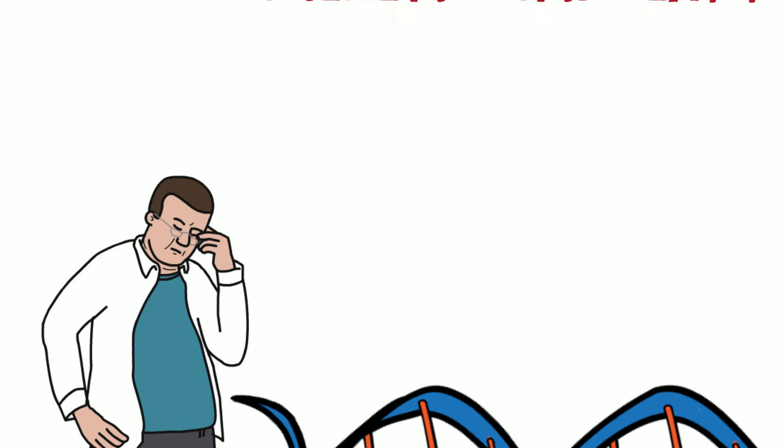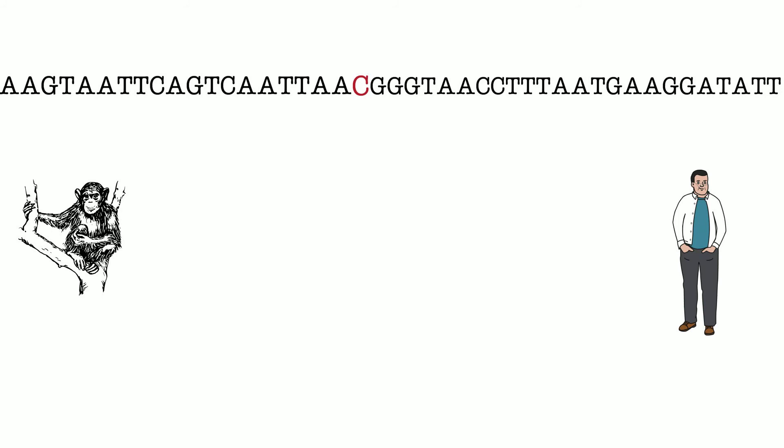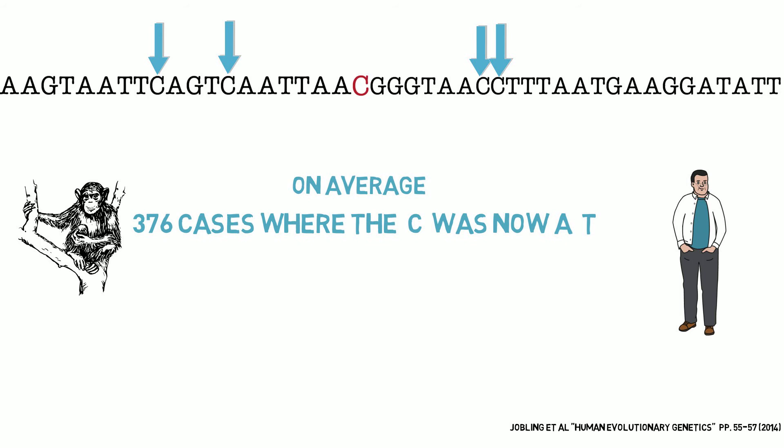But does it hold? Investigators analyzed about 2 million units of code and compared it unit by unit in both chimpanzees and humans. What they found was that where there was a C, there were on average 376 cases where that C was now a T, but only in cases where the neighboring code unit to that changed C had been an A, had been a T, or had been another C.